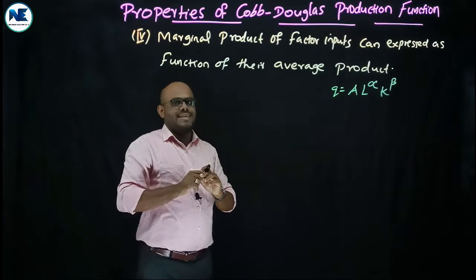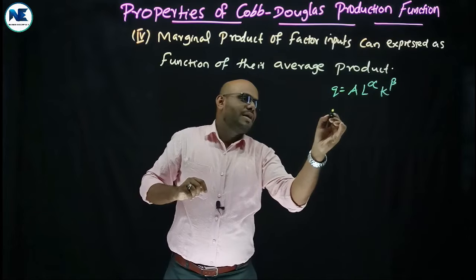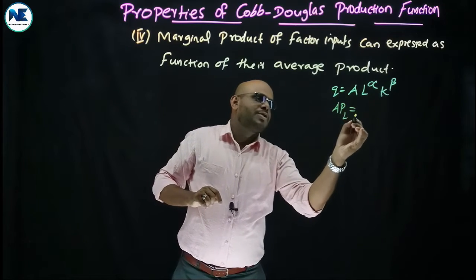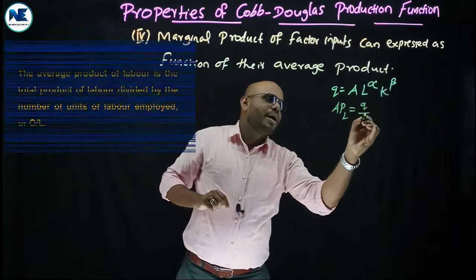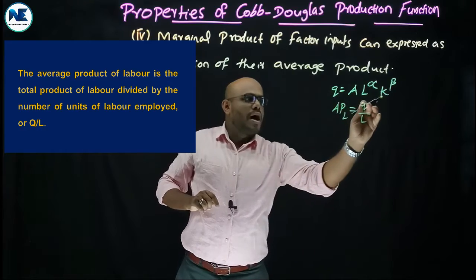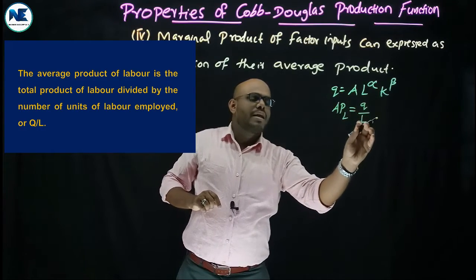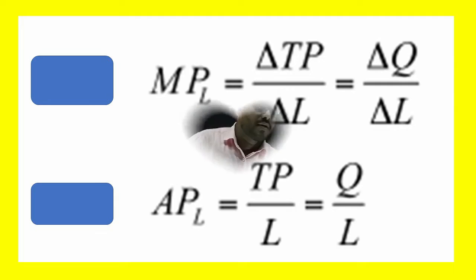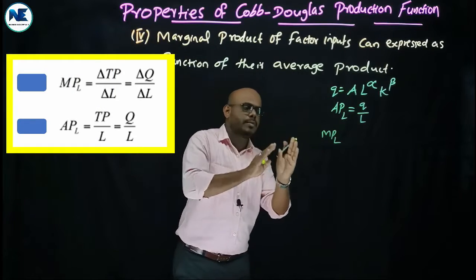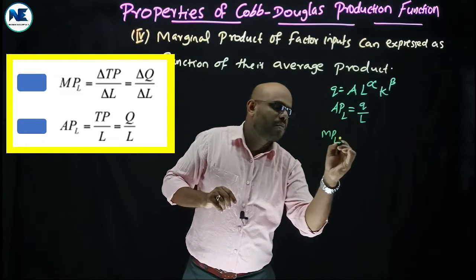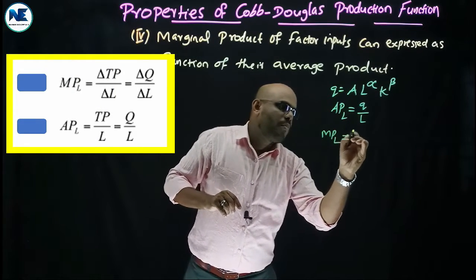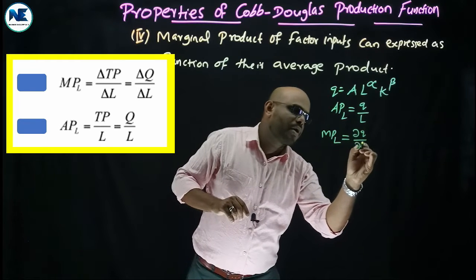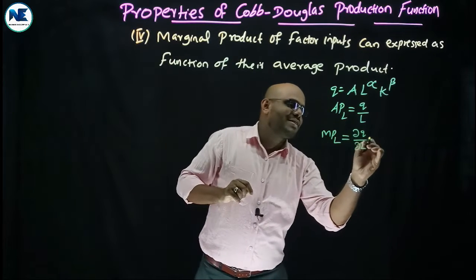The average product of labor is equal to Q divided by L, that is output divided by labor inputs. We know the marginal product of labor is the partial differentiation of Q with respect to labor — that is ∂Q/∂L.